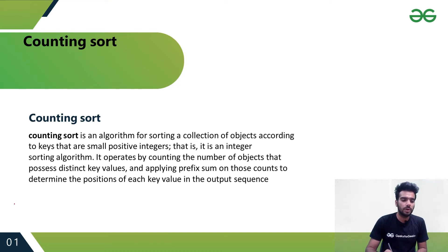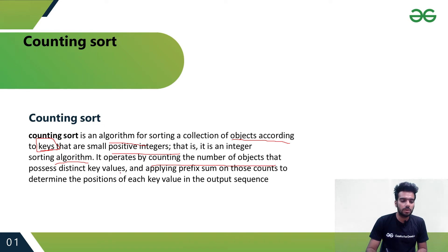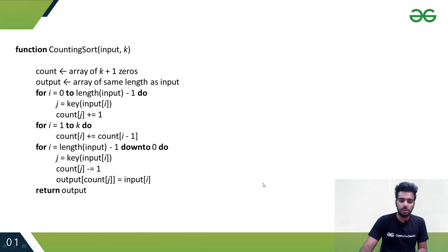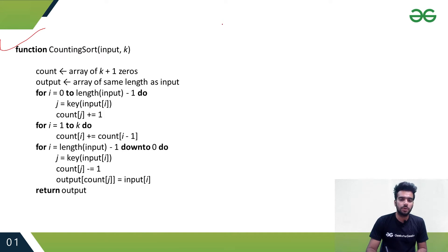Now let's see one more non-comparison based sorting algorithm: Counting Sort. Counting Sort is an algorithm for sorting a collection of objects according to keys that are small positive integers — it is an integer sorting algorithm. It operates by counting the number of objects with distinct key values and applying prefix sums on those counts to determine the position of each key in the output sequence.